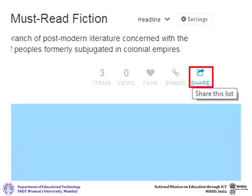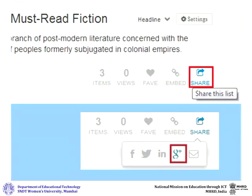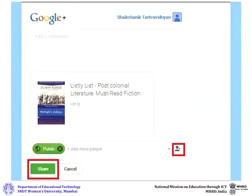A small pop-up will open. You can choose how you want to share your list. For this example, we will be using Google+ to share our list. Click on the Google+ icon. A Share on Google+ window will open. Click on the Browse People icon to select those you wish to share your list with. Once you finish selecting, click on Share.